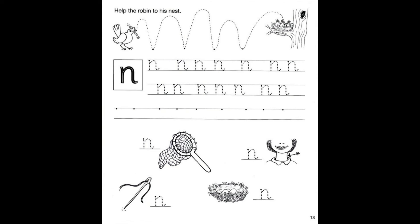So we're going to copy the dotted line, down, up, down, up, and help the robin to his nest. Take your time, do the best that you can. We'll go down and do the N's after we're done.